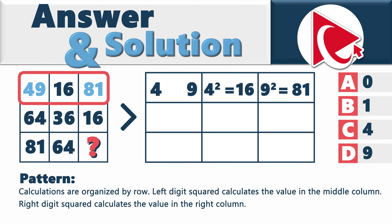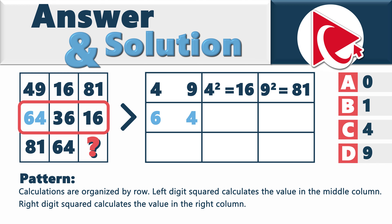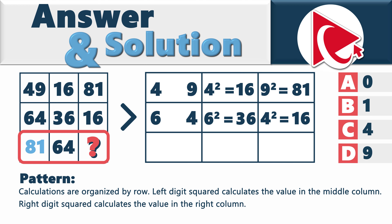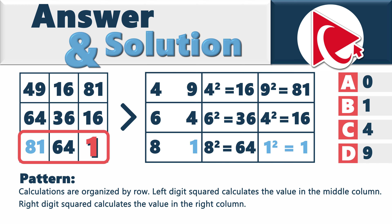The same way we do calculations in the middle row: 6 squared equals 36, and 4 squared equals 16. Using the values in the bottom row, we can calculate the missing number: 8 squared equals 64, and 1 squared equals 1. So the correct answer here is choice B: 1.